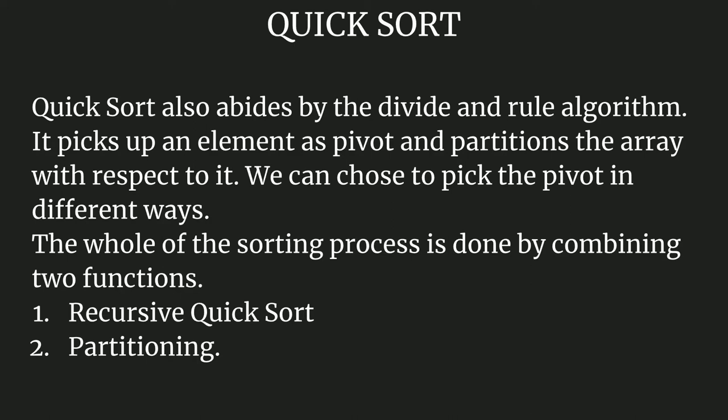Quicksort picks up an element as a pivot element and partitions the array with respect to it. We can choose to pick the pivot in different ways — there are mainly four ways. First, we can choose the very first array element as pivot. Second, we can choose the last element. Third, we can choose any random element, and lastly, we can choose the middle element. For this lecture, we will follow the convention of taking the last array element as the pivot element.